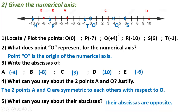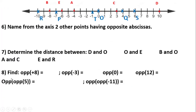Most of you solved these questions wrong, so please pay attention. In part six, we should name two other points having opposite abscissas. Looking at the axis, points E and S have opposite abscissas: E is on minus 6 and S is on 6, so they are symmetric to each other.